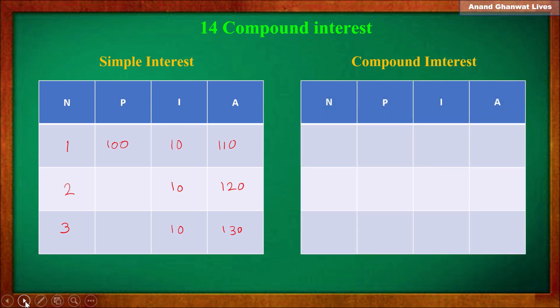In the compound interest chart, n is again the number of years, p is the principal, i is compound interest, and a is the amount. Let us use the same example — 100 rupees deposited in the bank at an interest rate of 10% pcpa. After the first year, the interest is added and the amount becomes 110.